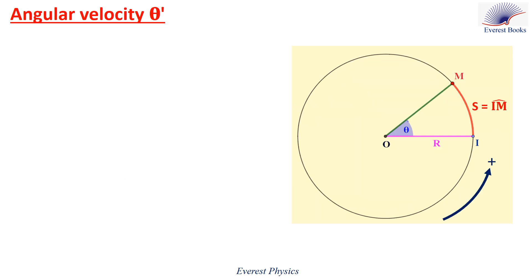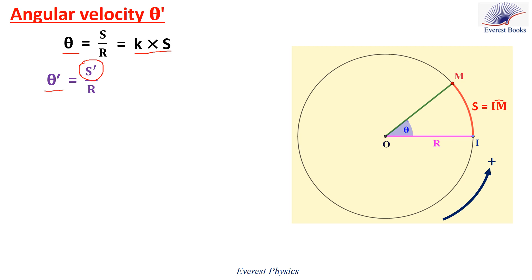We proved that theta equals s over r, which has the form of k times s, where k equals 1 over r, which is a constant. So let's differentiate both sides with respect to time. The derivative of theta with respect to time is theta prime. The derivative of k·s with respect to time is k times s prime, but k equals 1 over r, so it equals 1 over r times s prime. But s prime equals v, so theta prime equals v over r.